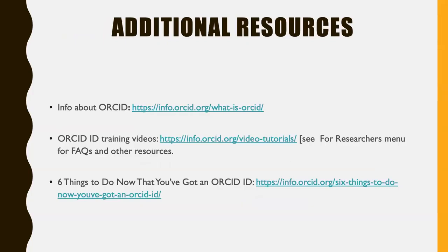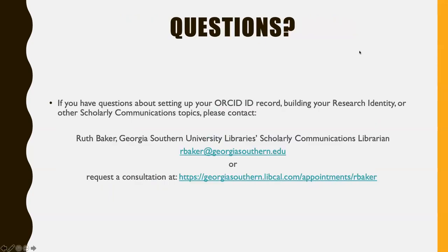For additional resources and further reading, if you want to know more about ORCID, here's a link. They also have training videos on the researchers menu, FAQs and other resources, and an article with six things you can do right now with an ORCID ID. That's the end of this mini tutorial. If you have questions about setting up your ORCID or any other scholarly communications questions, please don't hesitate to contact me. I am the Scholarly Communications Librarian at Georgia Southern. Here is my email address, or you can request a consultation for a one-on-one conversation about your work and building your research identity.